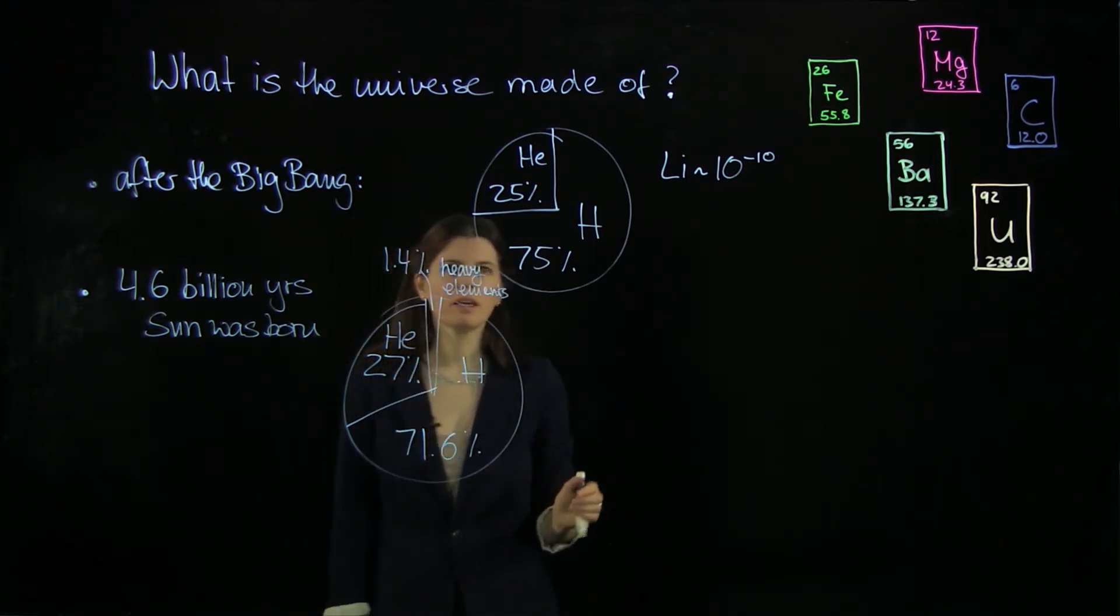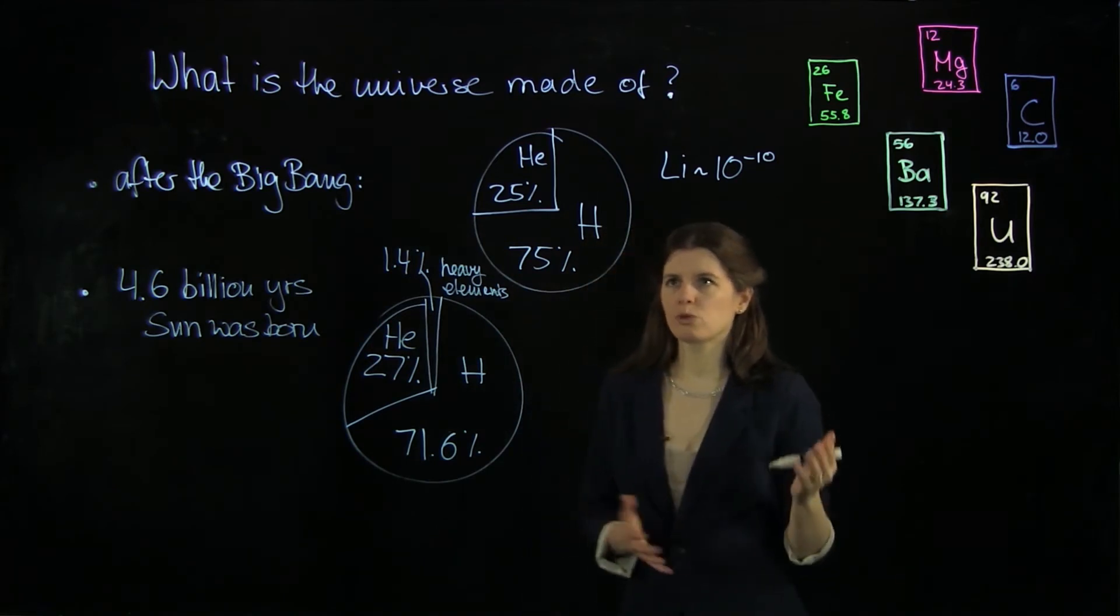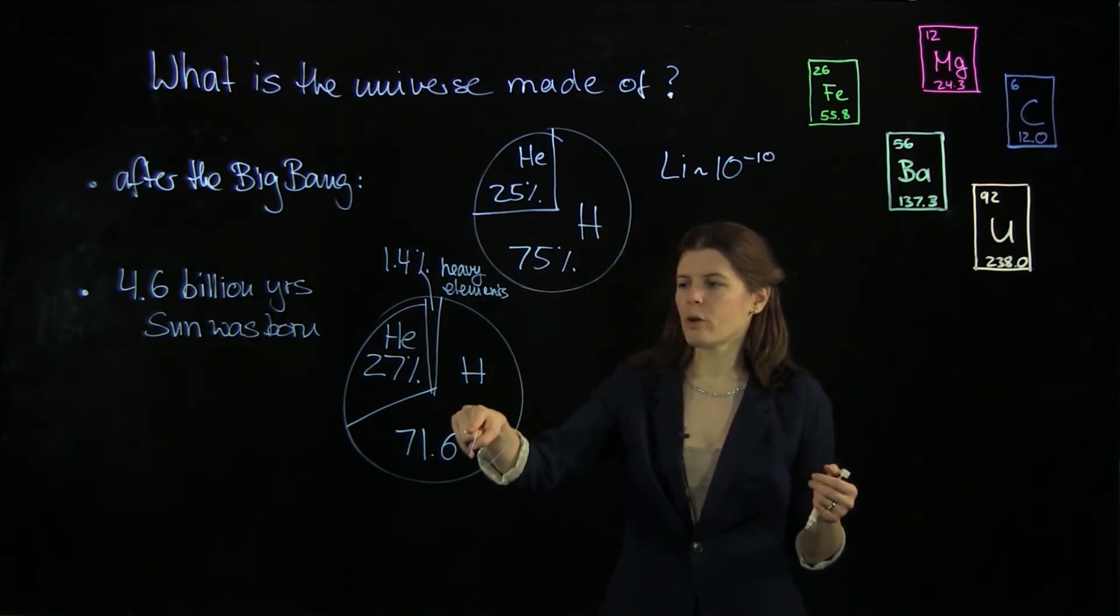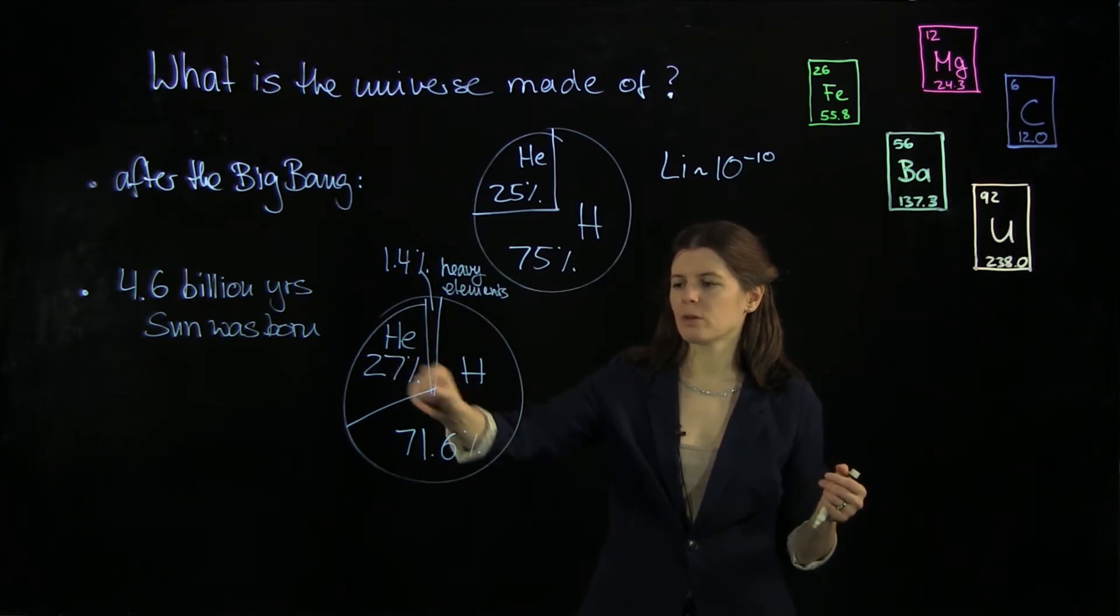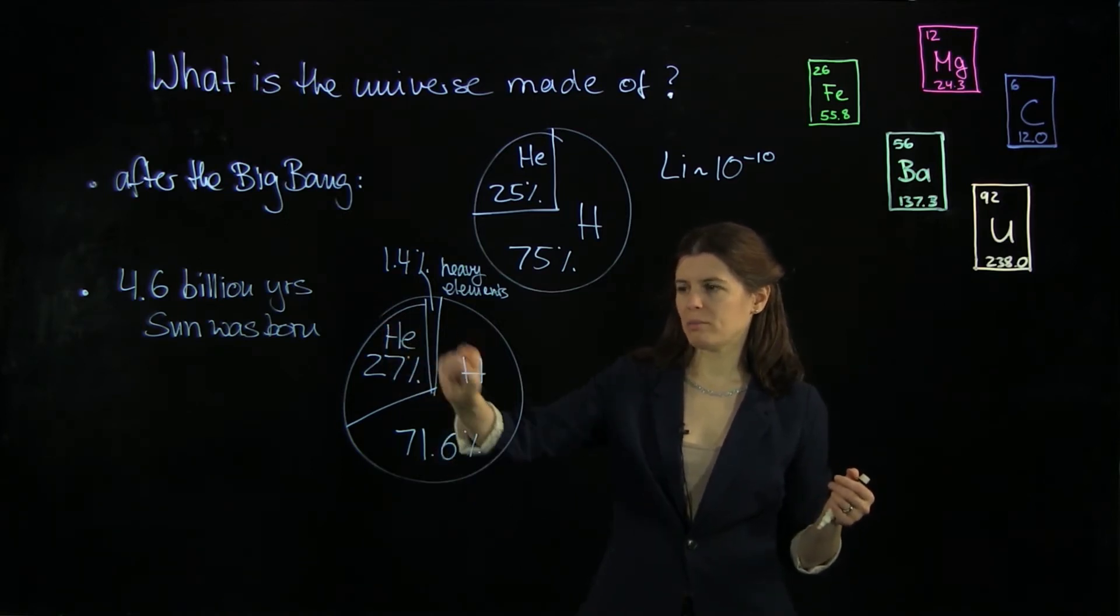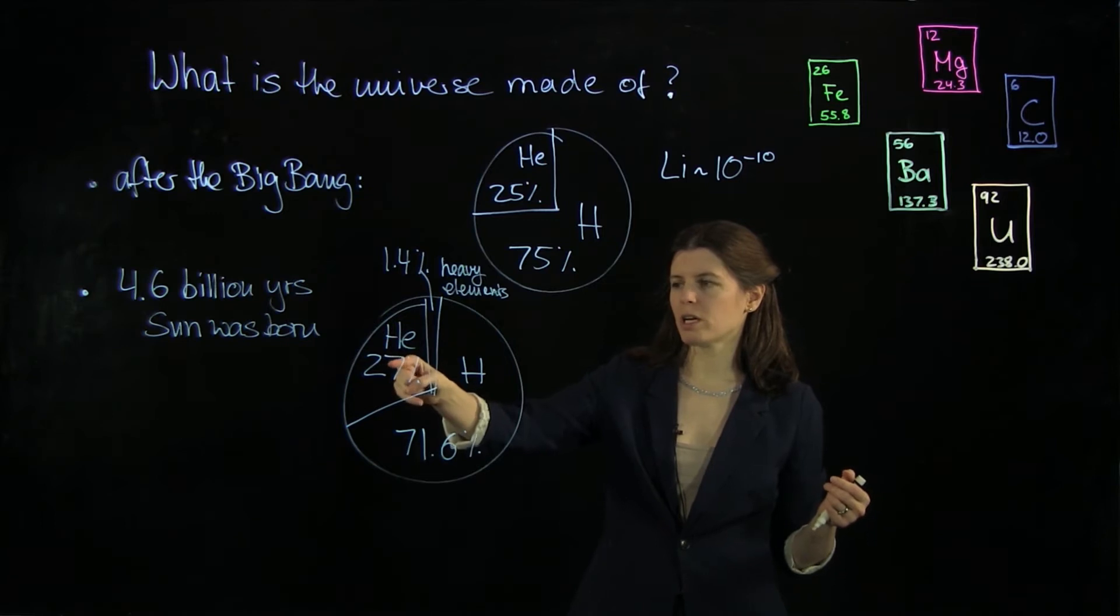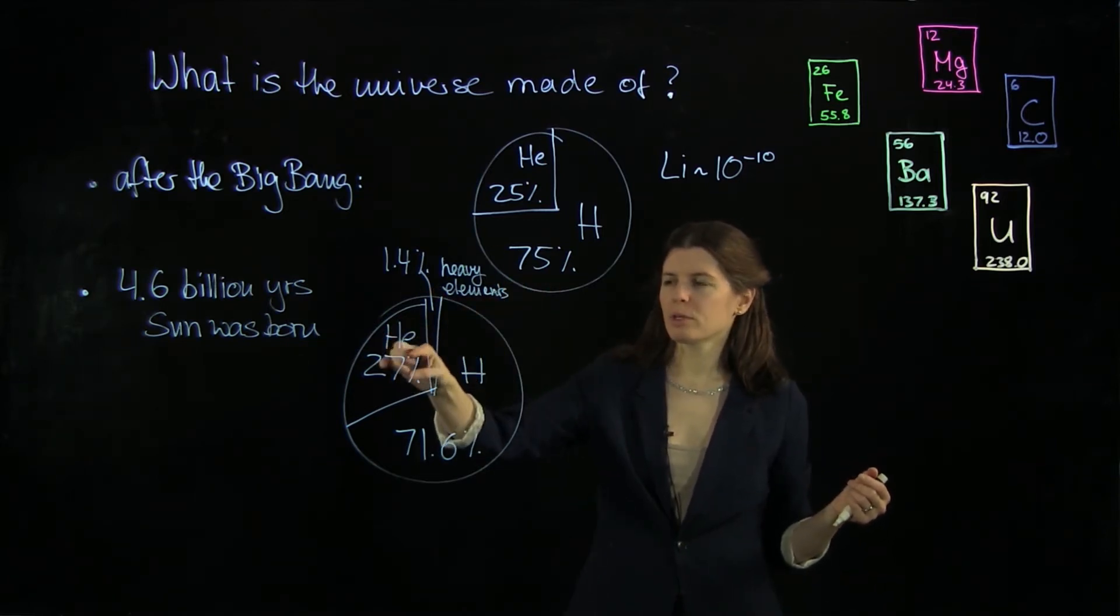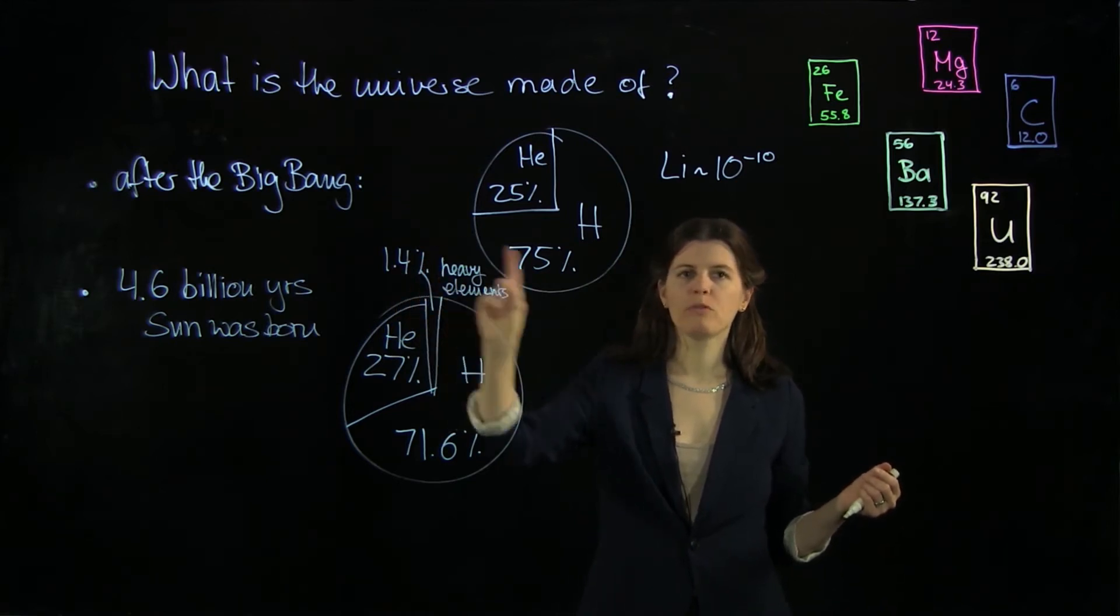And so what we can see, and we're going to go into more detail later, some of the hydrogen got converted into helium. So helium, through various steps, has been converted into heavier elements, a whole 1.4 percent.